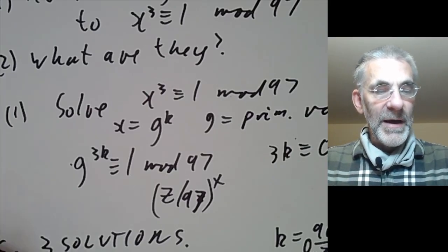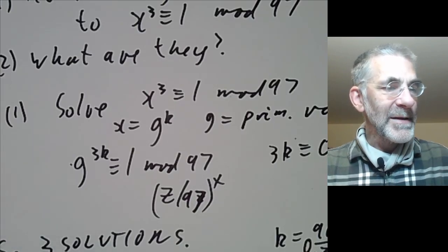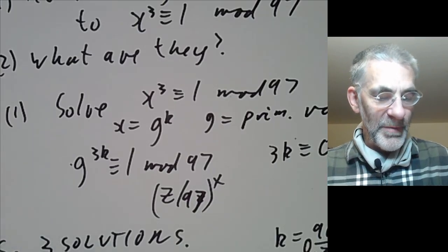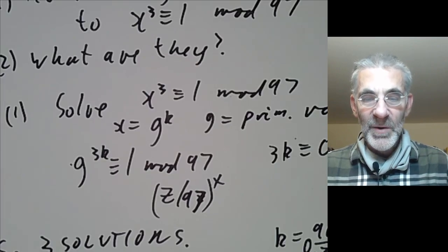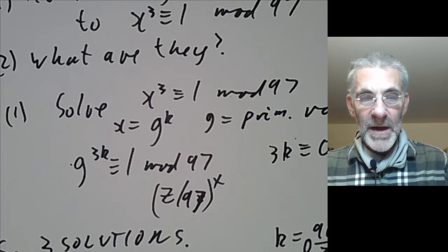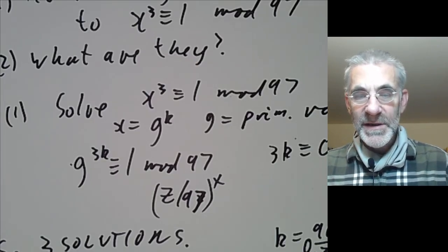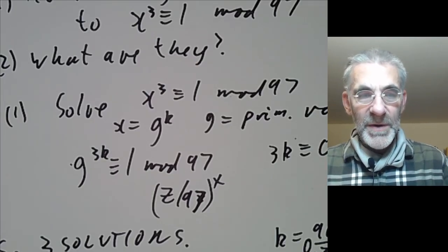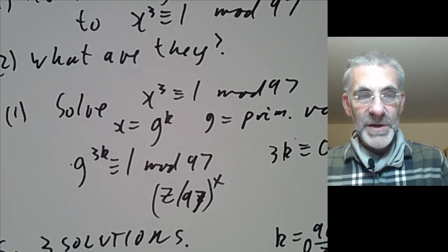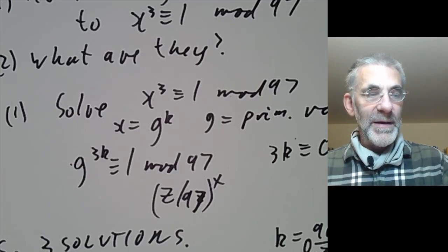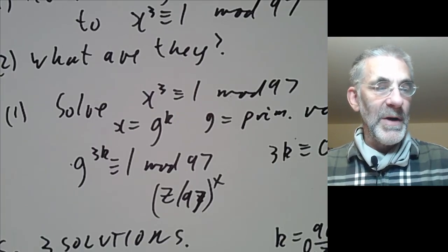That settles the problem of primitive roots modulo p — they always exist. In the next lecture we will discuss primitive roots modulo powers of p and also relate them to Wilson's theorem.